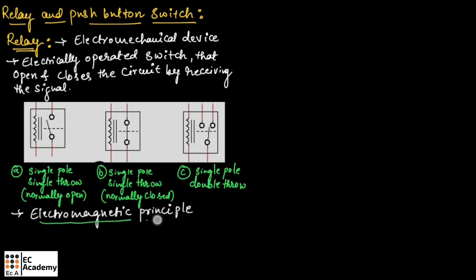The relay works on electromagnetic principle. When voltage is applied to the relay coil, the current will flow through the coil, which in turn generates a magnetic field. This magnetic field will attract the armature core and it moves the contact point. The movement of the contact point changes the power signal flow path.